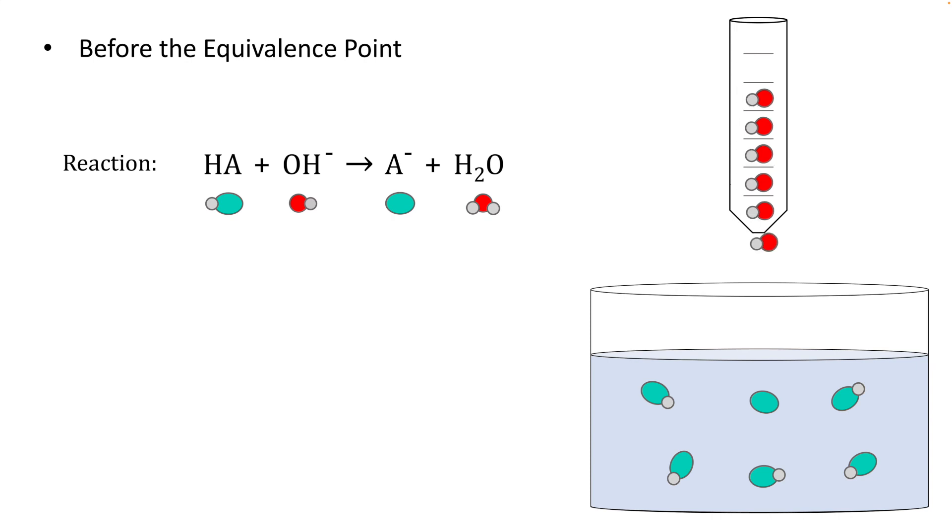Continue the titration a little bit more. Some more hydroxide comes in, finds more HA molecules to react with, removes the hydrogen ion, converts the HA into its conjugate base. Let's pause now and take a look at what's in solution because we want to calculate the pH at various places. Here'd be a good place to try.